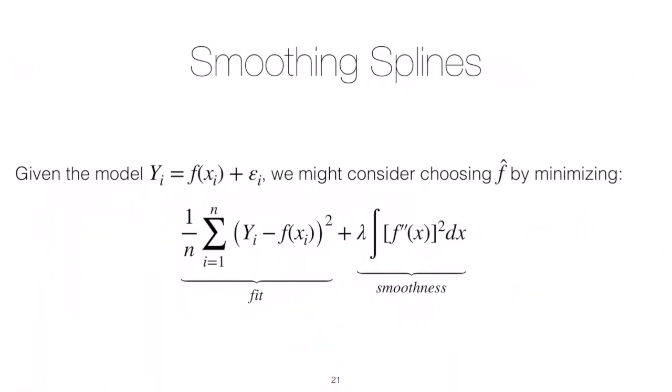The first term in the function controls the fit. That's the MSE. The smaller that term is, the closer the fit will be to the data. You can try to make that term very small by choosing an f that would make your f of x_i very close to your y's.